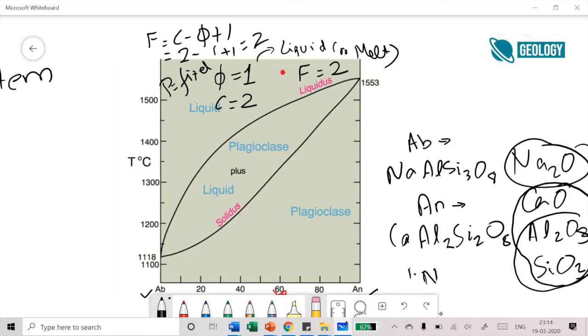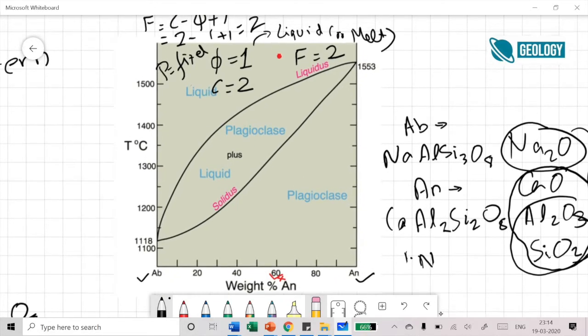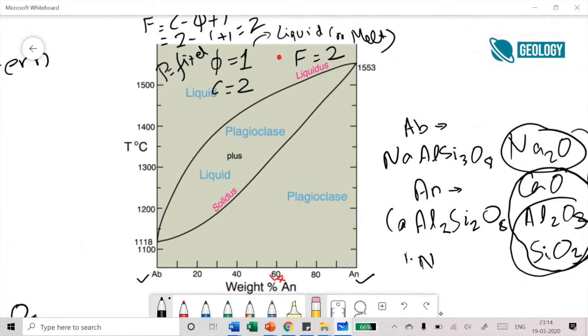You need to define the system with a minimum of two intensive variables. What are those two intensive variables? You need to define both temperature and composition within this region. All these points have different temperature and composition values.